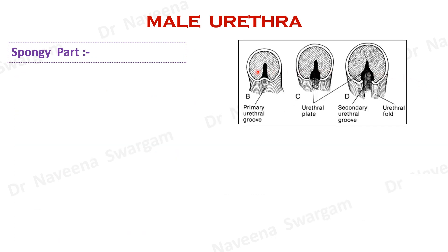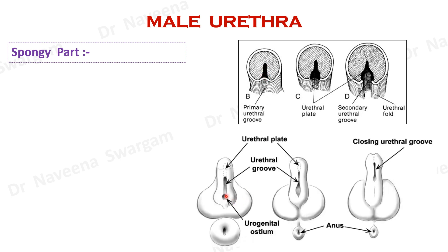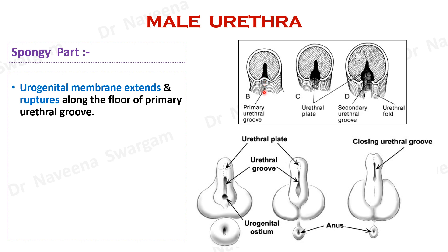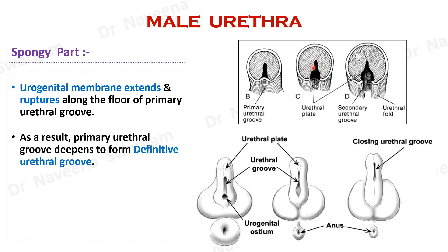Here is the cross section of developing penis, showing the primary urethral groove on its undersurface and the canalized urethral plate. At this stage, ectodermal cells lining the urogenital membrane proliferate and extend along the floor of this groove. Further the membrane ruptures so that the primary urethral groove opens into the canalized urethral plate, and as a result a deep definitive urethral groove is formed.